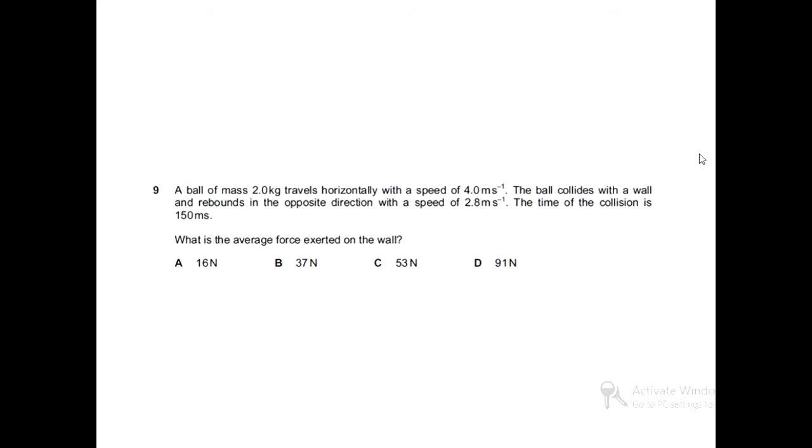This will not remain mv minus mu over T because the direction of the velocity is reversed when the ball is colliding with the wall and when it is rebounding. So the expression will become mv plus mu over T because of opposite direction of the velocity of the ball.